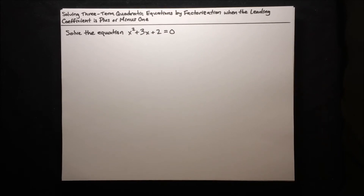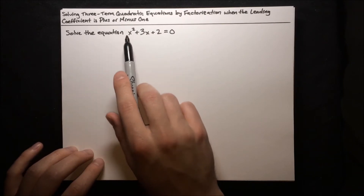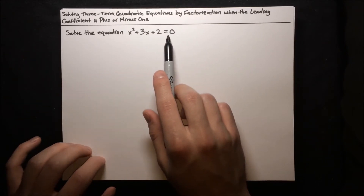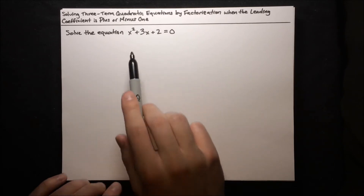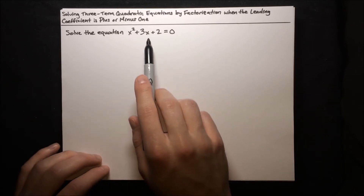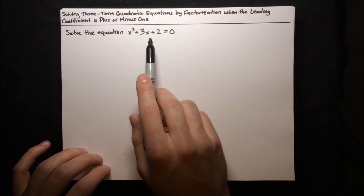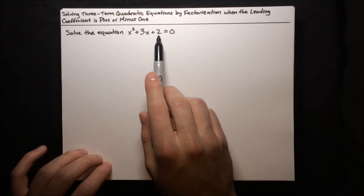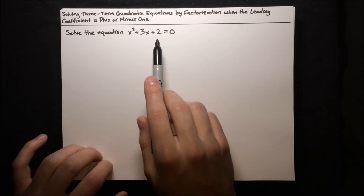Let's start off with an example. We want to solve this equation: x squared plus 3x plus 2 equals 0. The way we're used to solving these kinds of equations is by factoring out an x or moving it to one side, but in this case there's a constant 2 that's going to prevent either of those methods from working. So what do we do here?